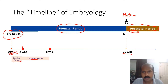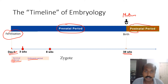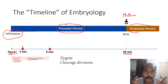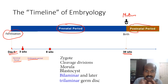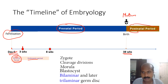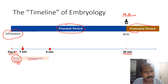Why is it called the germinal period? Day zero is the point where fertilization occurs. After fertilization a zygote is formed; the zygote undergoes cleavage divisions to form a morula, then a blastocyst, then a bilaminar germ disc, then a trilaminar germ disc. These are all arrangements of cells called germ layers, and that is why this period is called the germinal period. Another term also used is the early embryonic period.